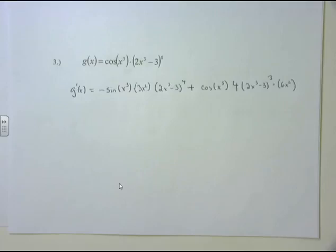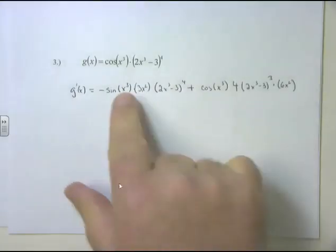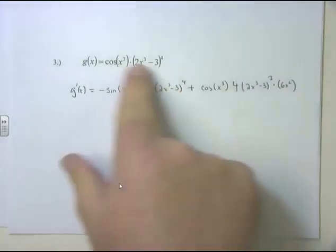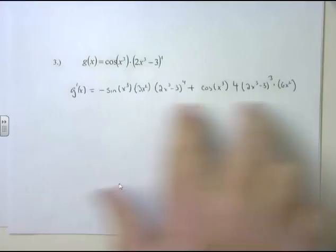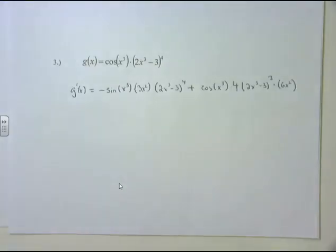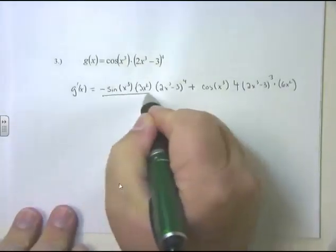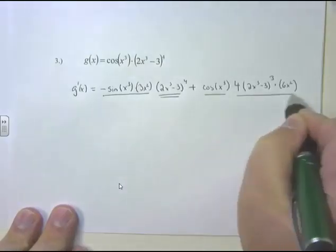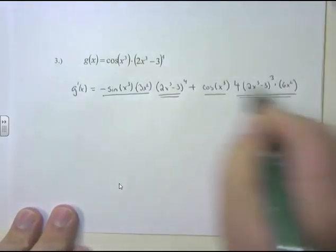The big picture was the product rule — derivative of the first times the second, plus the first times the derivative of the second. Both parts required the chain rule, which makes these problems more difficult. Always stop, pause, and ask yourself what's the big picture. In this chapter, this is exactly the form of the answer we want to see: derivative of the first times the second plus the first times the derivative of the second.